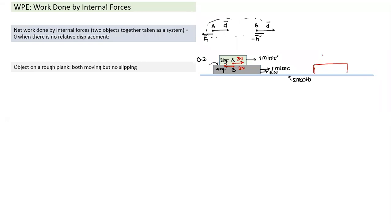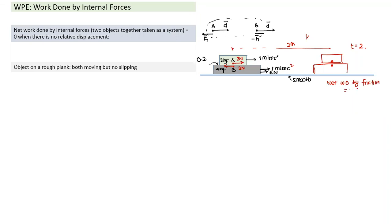In two seconds with acceleration 1 m/s², displacement is 2 m. Work done by friction on A is +4 J (force 2 N × 2 m). Work done by friction on B is −4 J. Net work done by friction — treating them as a system — is zero. This is the net work done by internal forces.